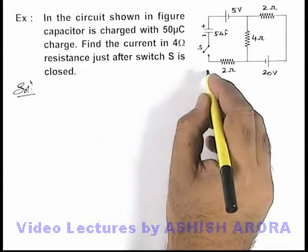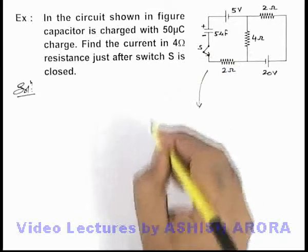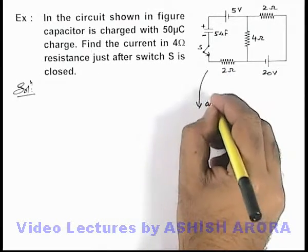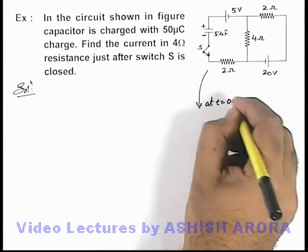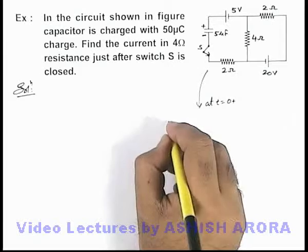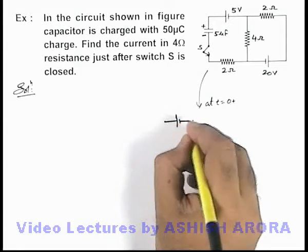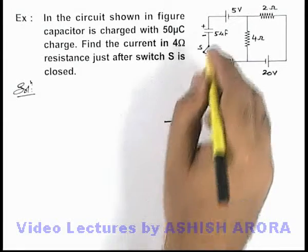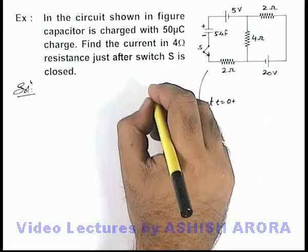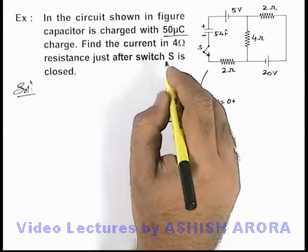Now in this situation if we just redraw the circuit after closing down, just at time t equals to zero plus, we redraw the circuit it'll look like this. This is the 5 volt battery and this is the capacitor which is charged with 50 microcoulomb charge.